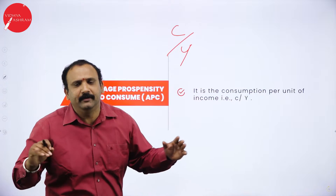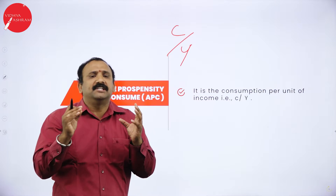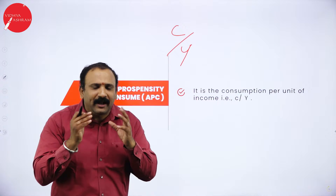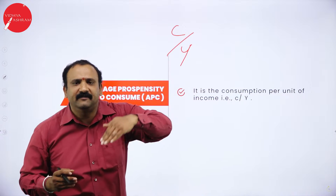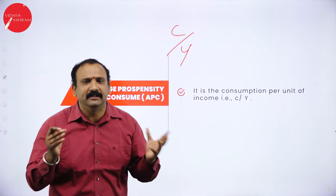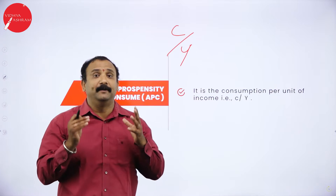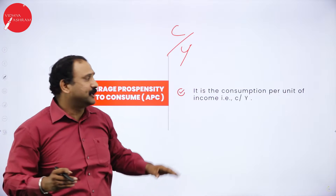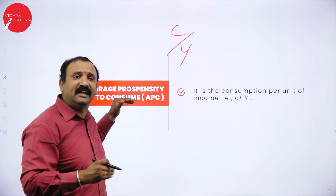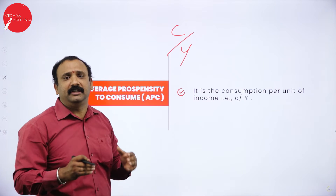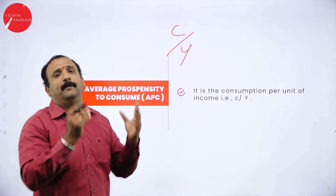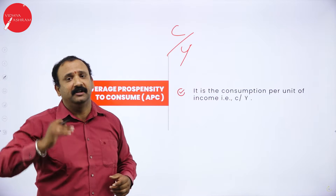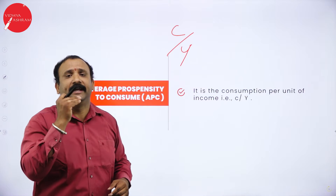Sometimes we want to increase consumption, sometimes decrease, sometimes remain constant — so consumption in an economy is a very dynamic factor. In a situation like a pandemic, the consumption level starts coming down because people don't have money. But the moment the situation becomes better, the average consumption will again start shooting up. So it is very important that the average propensity to consume starts going up in any macroeconomic condition.